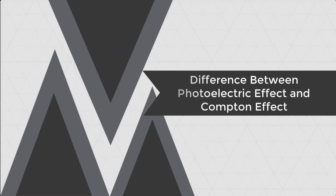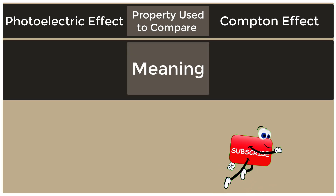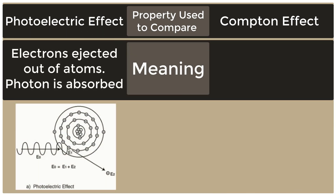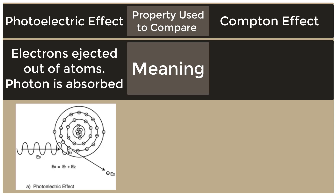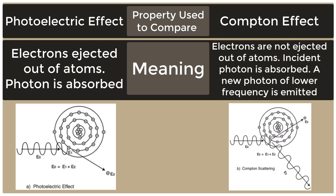The difference between the photoelectric effect and the Compton effect. In the photoelectric effect, electrons are ejected out of atoms and the photon is absorbed — here is a picture. In the Compton effect, electrons are not ejected out of atoms; the incident photon is absorbed and a new photon of lower frequency is emitted.